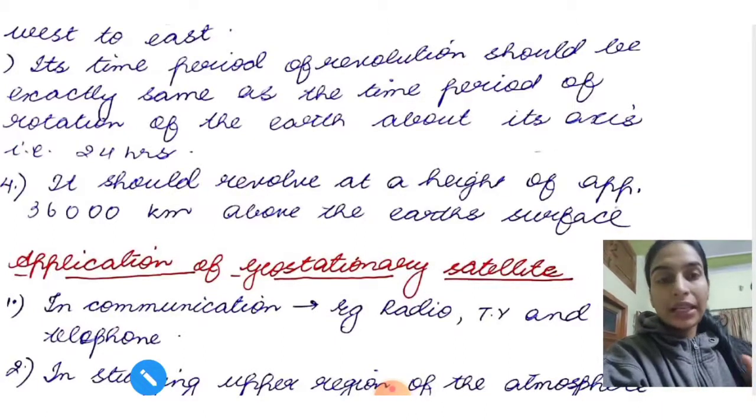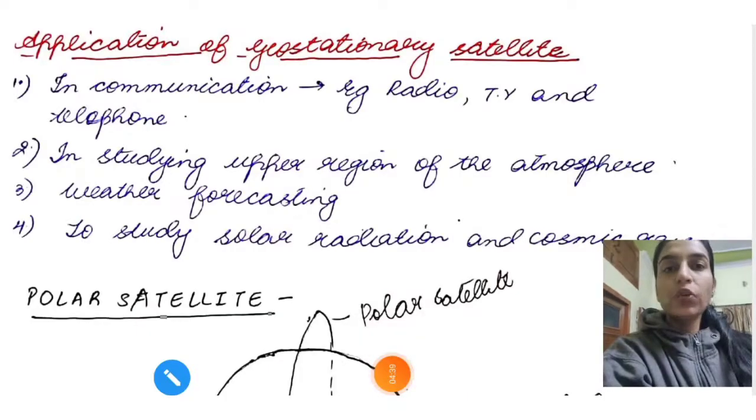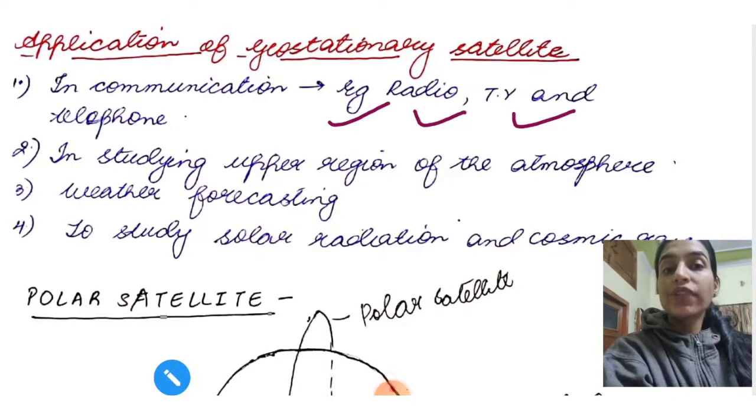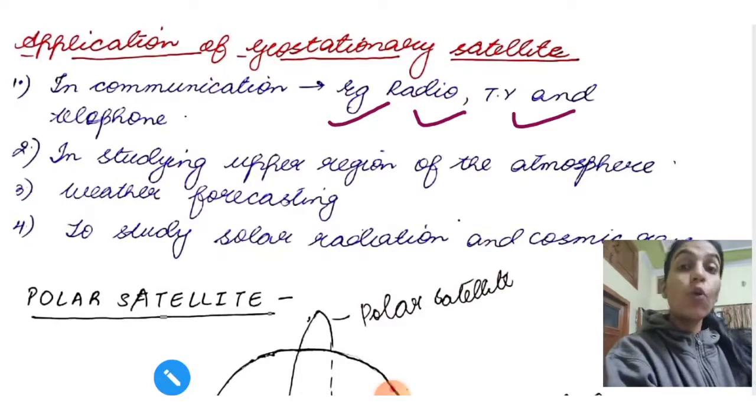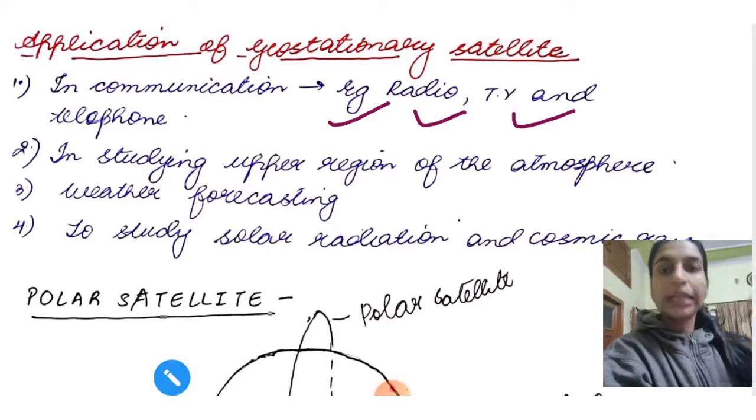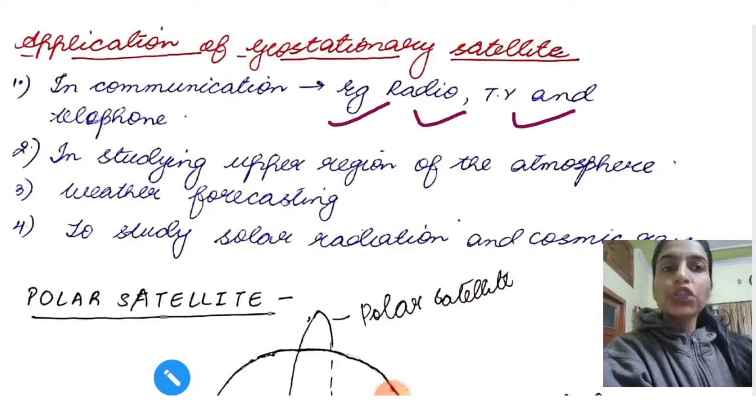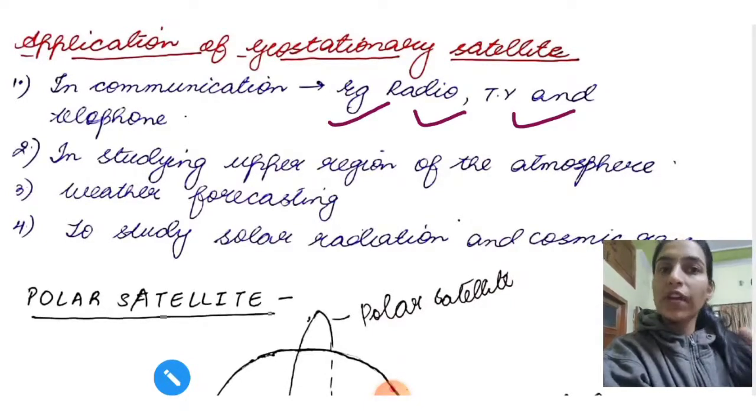We'll look at the applications of geostationary satellites. In communication, for example radio, television, telephone. In studying upper region of the atmosphere, weather forecasting, to study solar radiations and cosmic rays. It's viewing Earth from outside. From outside any object appears overall, completely. So every piece of information we get through geostationary satellites.